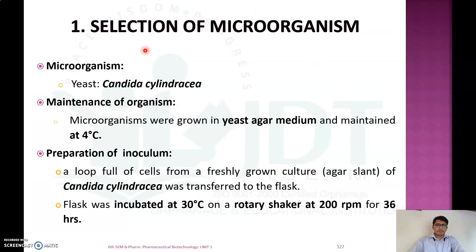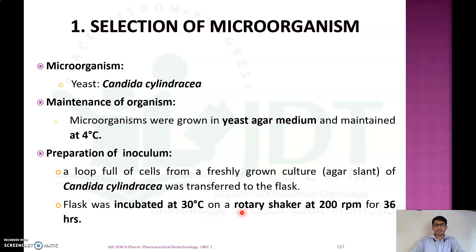The most commonly used microorganism for the production of lipase is Candida cylindracea. It can be maintained by growing in yeast agar media at 4°C. From this microorganism we can prepare the inoculum by transfer of a loopful of fresh growth into a flask. This flask is incubated at 30°C on a rotary shaker at 200 RPM for 36 hours to prepare the inoculum, which is then used for the production process.